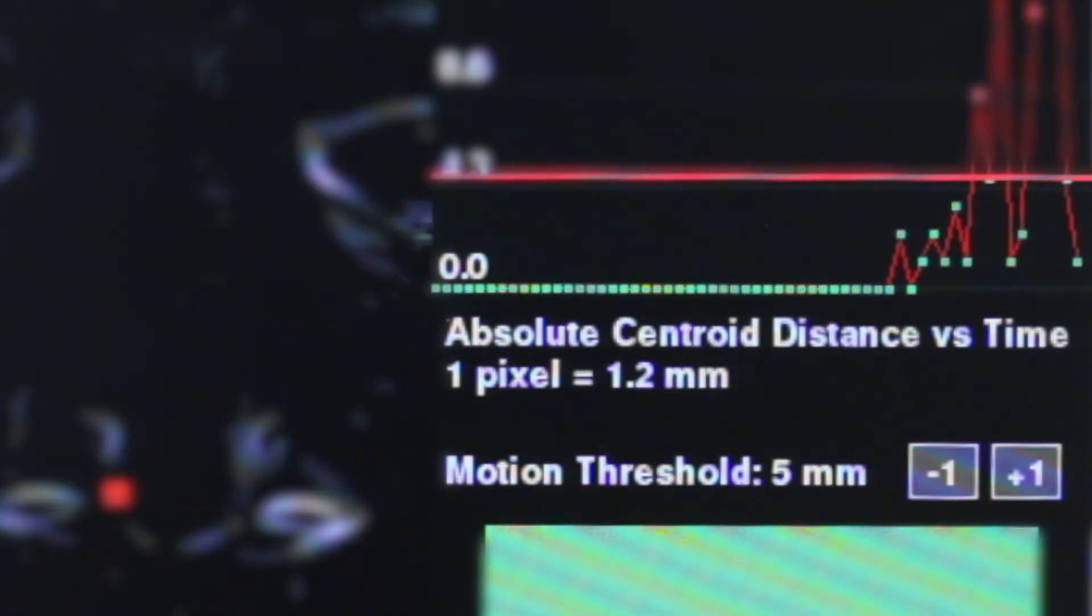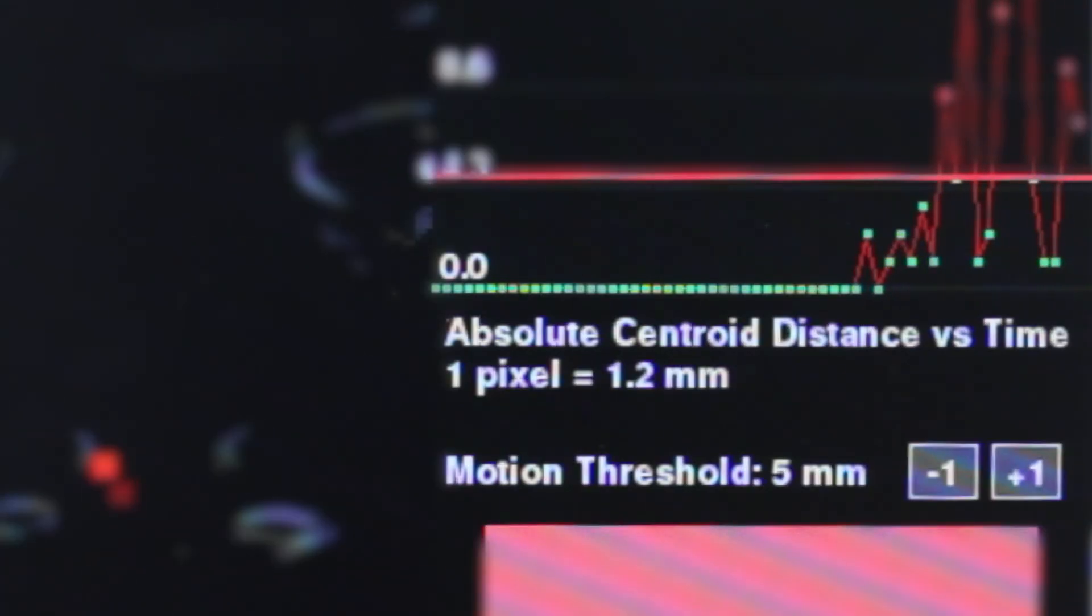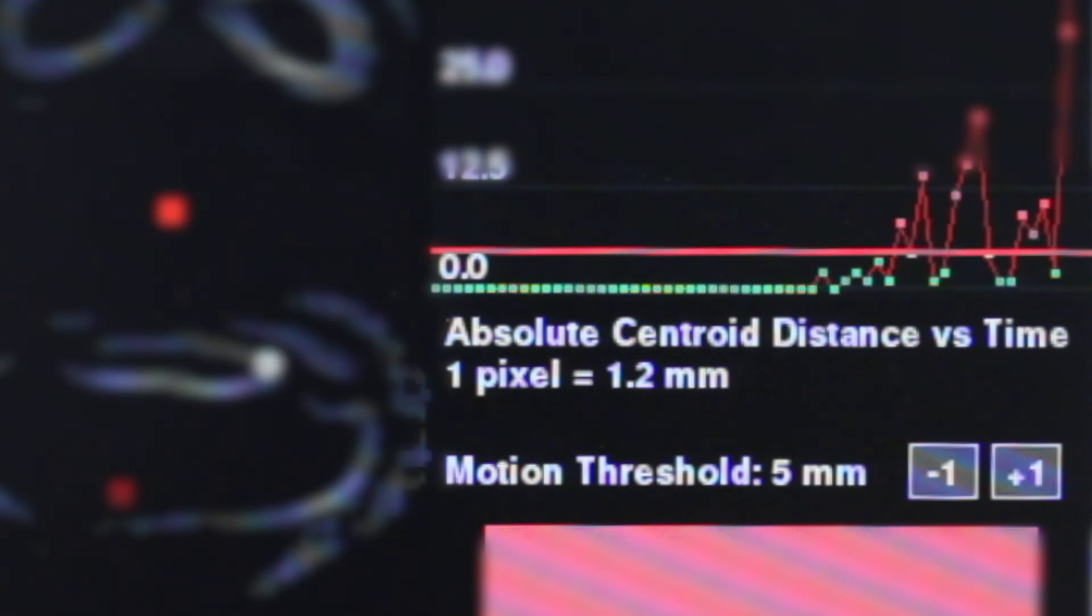The problems with scaling it down is that our scale in terms of pixels per millimeter is directly related to how many pixels we have. At a hundred by sixty pixels we were getting about four millimeters per pixel, and that's the level of detail that we actually want to be able to detect.